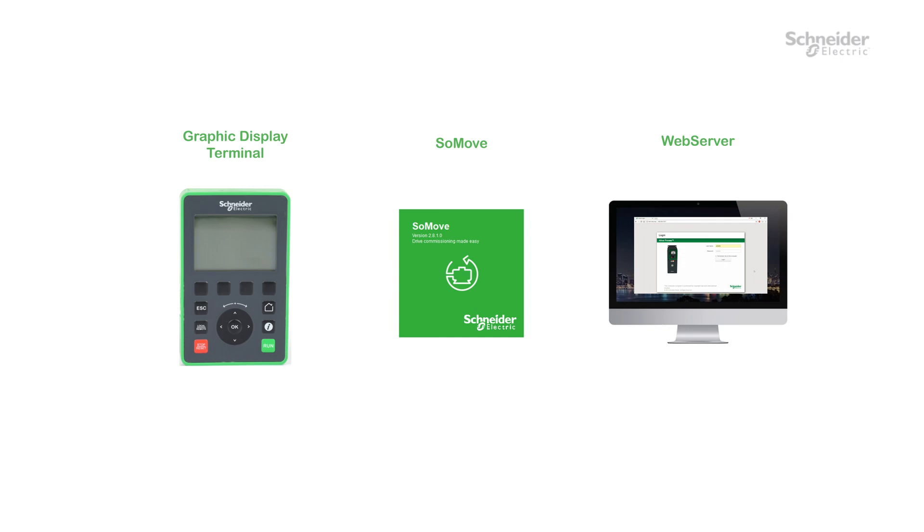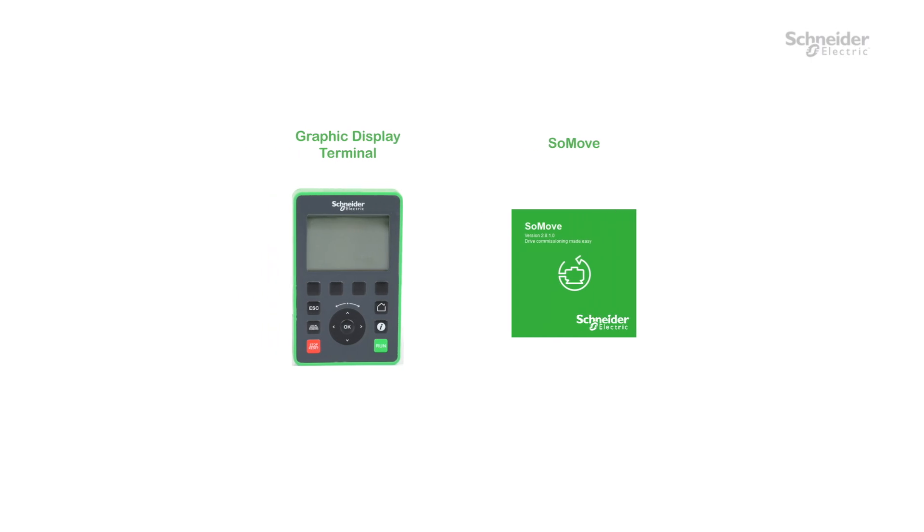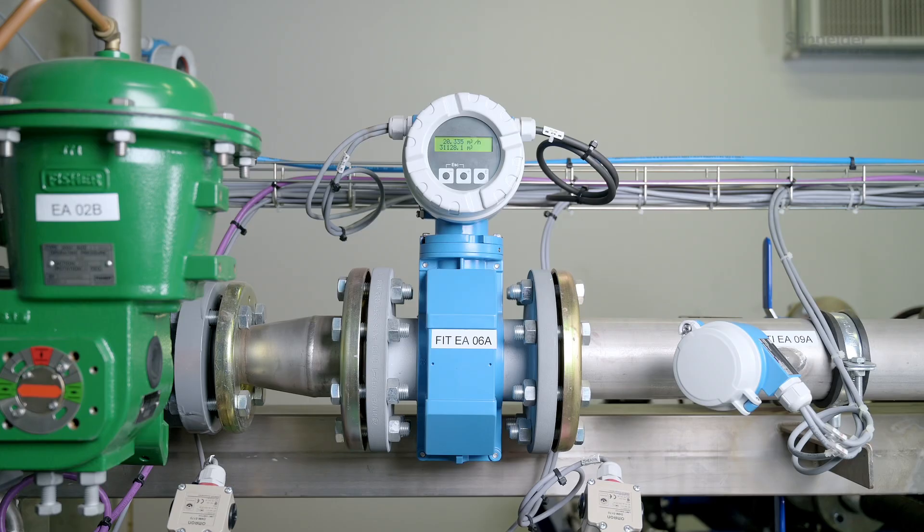Pump characteristics may be set using the graphic display terminal, SoMove software, or embedded ATV600 webserver. In our example, we will use the graphic display terminal and SoMove software in connected mode. You can use a flow sensor connected to an analog input and a pressure sensor.